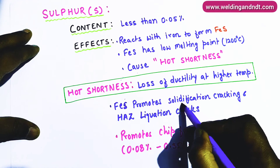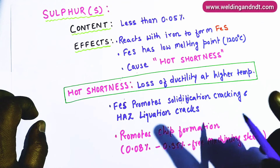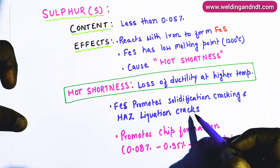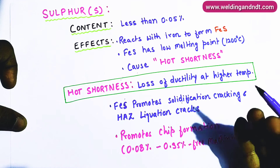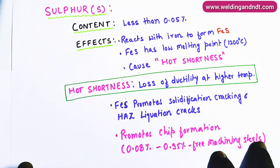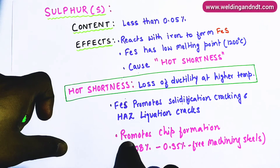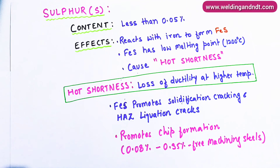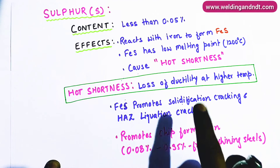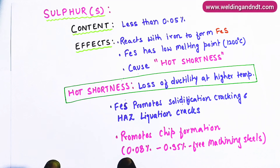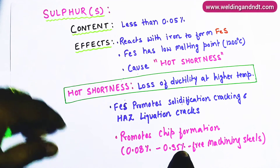Due to FeS, solidification cracking and HAZ liquidation cracks increase — FeS promotes these cracks. However, FeS also helps in chip formation. If you have to machine the product, FeS helps chips form faster, making machining faster. FeS is present at 0.08 to 0.35 percent in free machining steels, and these steels can be machined very fast.